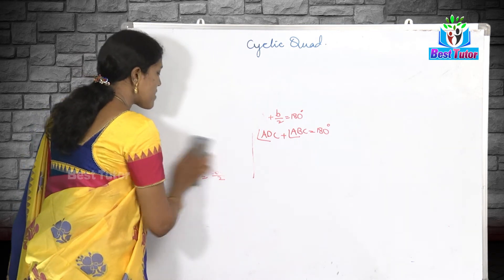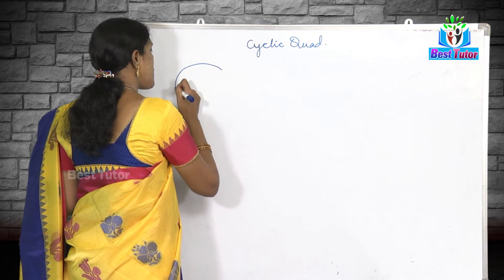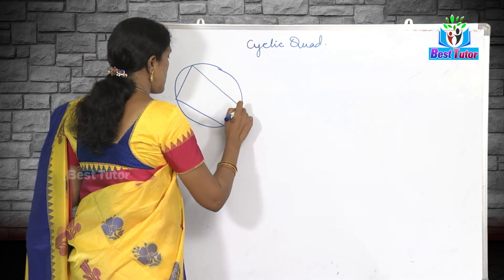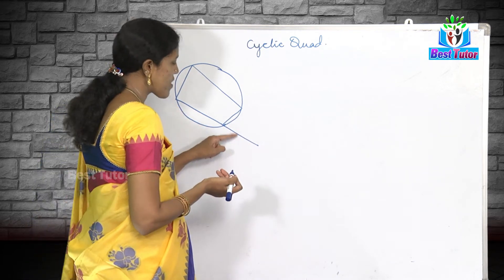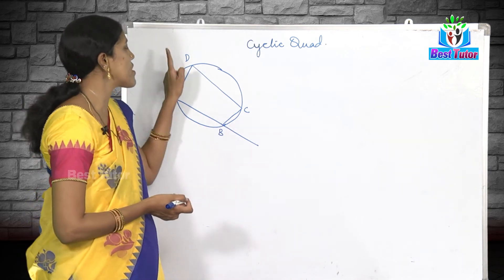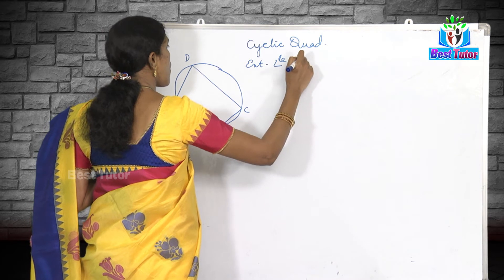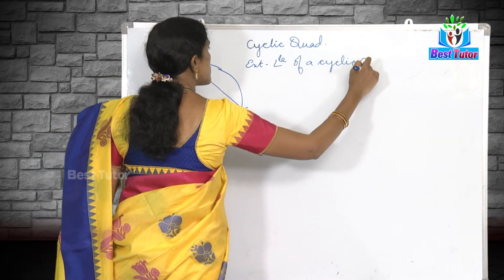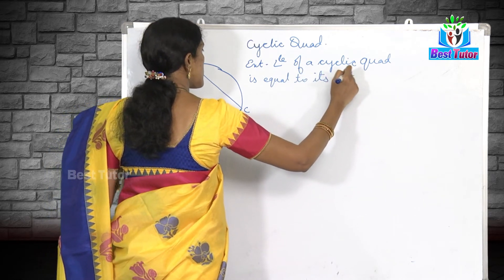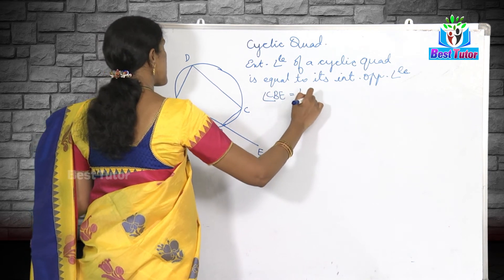The next property is: the exterior angle of a cyclic quadrilateral is equal to its interior opposite angle. Here ABCD is a cyclic quadrilateral because all four vertices are on the circle. I extend a side to get an exterior angle at point E. We need to prove that the exterior angle CBE is equal to the interior opposite angle ADC.